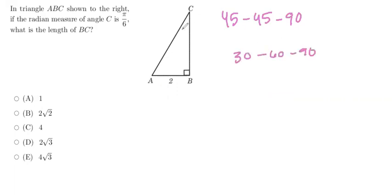So in this case, we are given that this angle is pi over 6, and I'm just going to convert that quickly to degrees. If we remember, pi is equal to 180 degrees. So this would be the same as 180 degrees over 6, which is just 30 degrees. So I know this angle is 30.